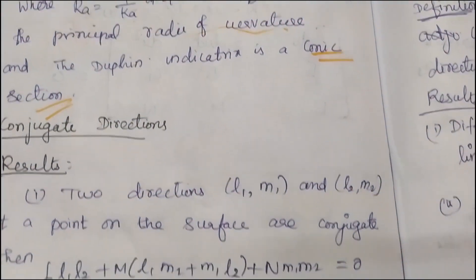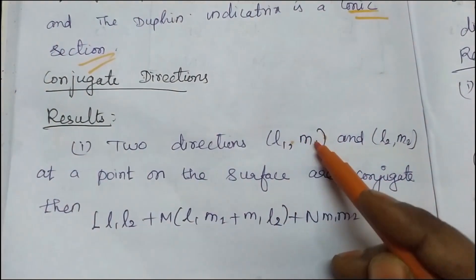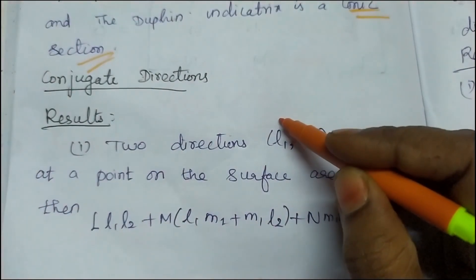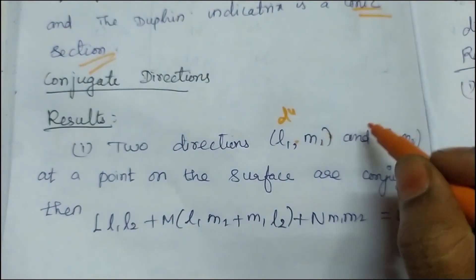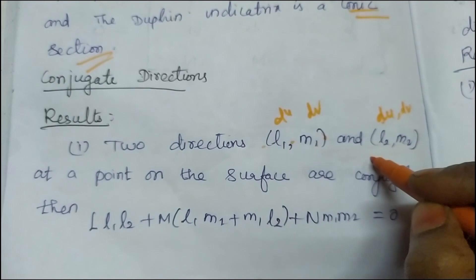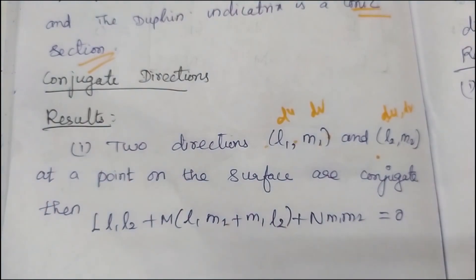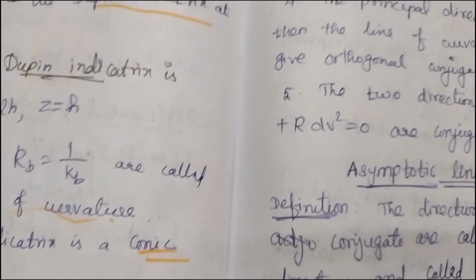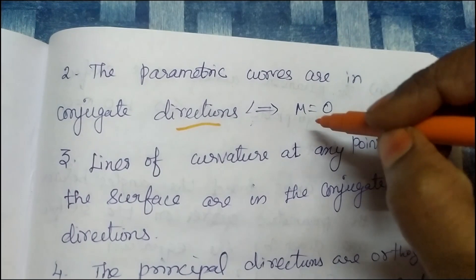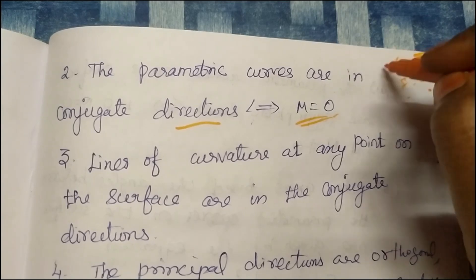Conjugate direction: these two directions L1 M1, L2 M2 — points on the surface are conjugate. Parametric direction: conjugate direction M equal to 0. F equal to 0, where is the parametric curves? Orthogonal — in the third class.